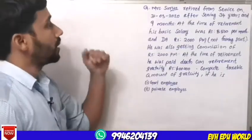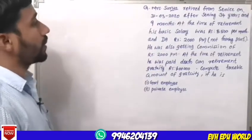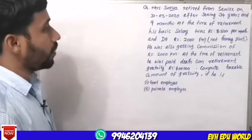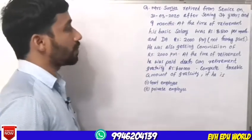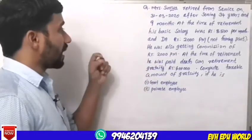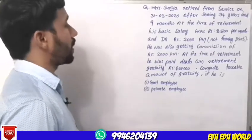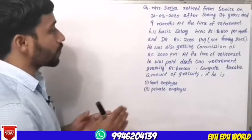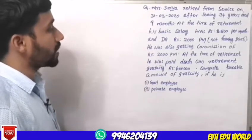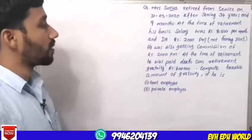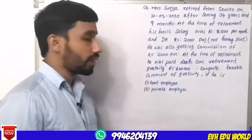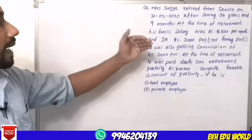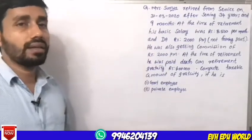Next question: Mrs. Surya retired from service on 3rd March 2020 after serving 34 years and 9 months. At the time of retirement, her basic salary was Rs. 8,500 per month, DA Rs. 2,000 per month not forming part of salary, and she was also getting a commission of Rs. 2,000 per month. At the time of retirement, she was paid death-cum-retirement gratuity of Rs. 4,00,000. We need to compute gratuity taxable value if he is a Government Employee and if he is a Private Employee.